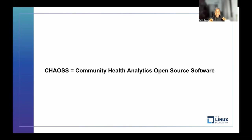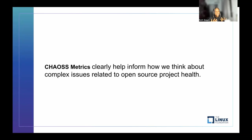For today, we are talking about DEI. At CHAOSS, these metrics that we create help us think about different complex issues related to open source project community health. They help us analyze our efforts — in this specific talk, analyze a community's efforts toward DEI — and also look at indicators of things or issues that we might be missing. These metrics help inform us about how we think about these different issues.